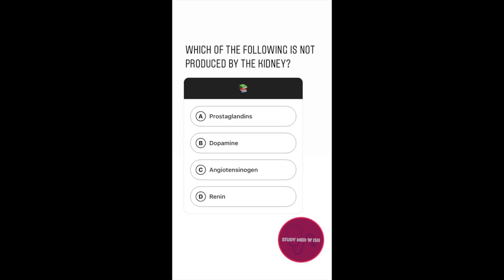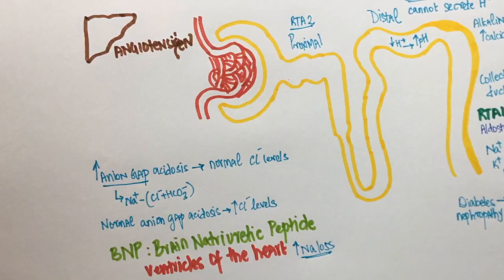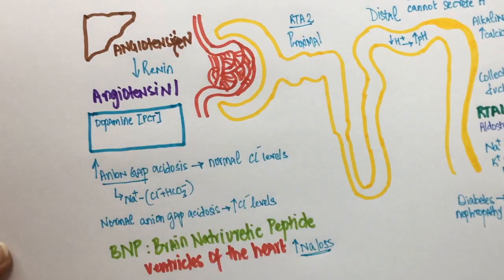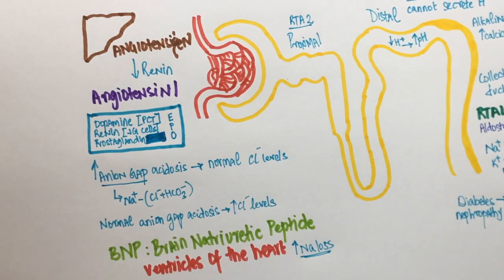The answer to this question is angiotensinogen. Angiotensinogen is produced by the liver. It gets converted to angiotensin 1 by the action of renin. Renin is produced by the juxtaglomerular cells of the kidney. The proximal convoluted tubule produces dopamine. The kidney also produces prostaglandins.